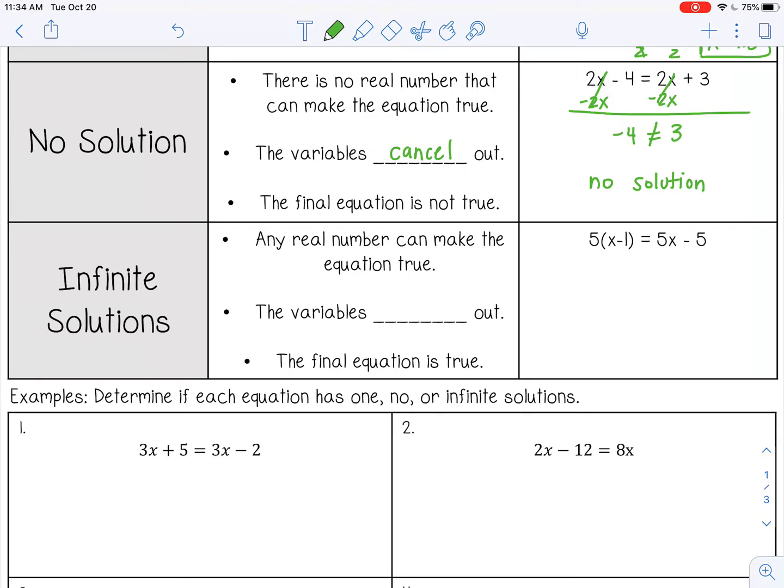And then the final type is an equation with infinite solutions. That means any real number can make the equation true. So this is when the variables cancel out, but the final equation is true.